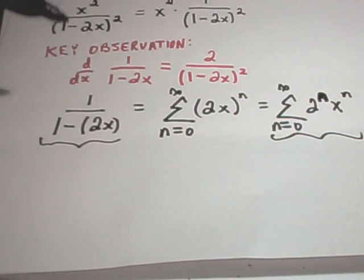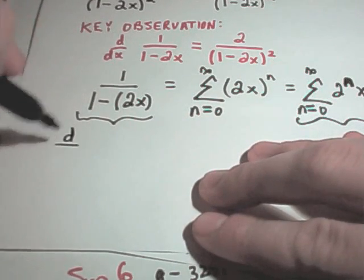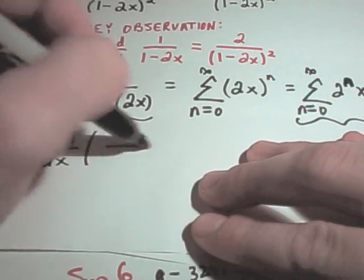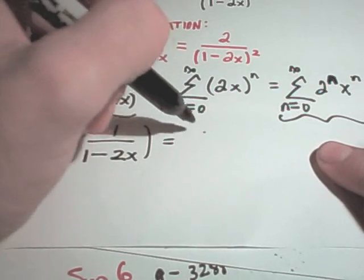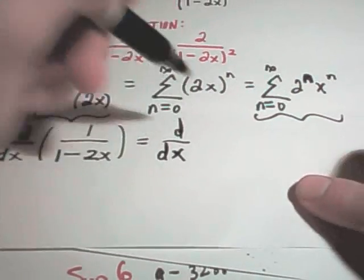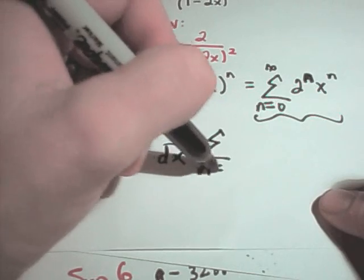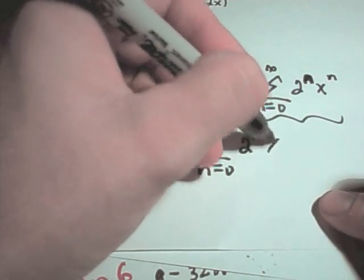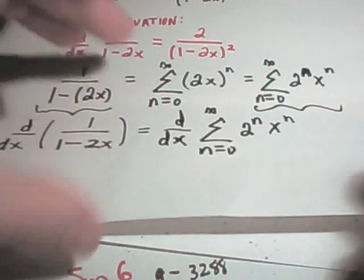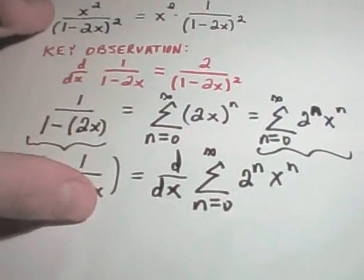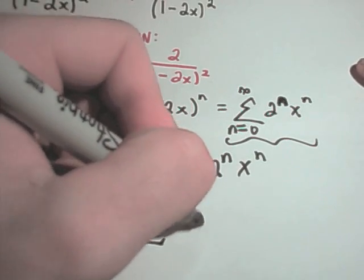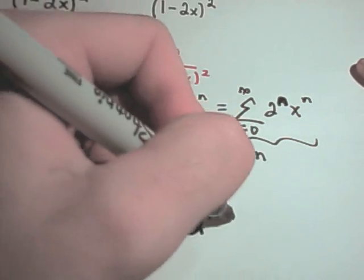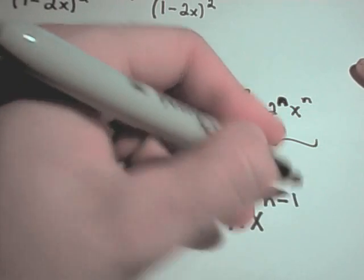The idea is, if I take the derivative of 1 over 1 minus 2x, that's going to equal the derivative of the right-hand side — the summation from n equals 0 to infinity of 2 to the n times x to the n — and you can take derivatives of this stuff almost like normal. The derivative is: 2 to the n is just a constant, the n will come out front, and then we'll get x to the n minus 1.